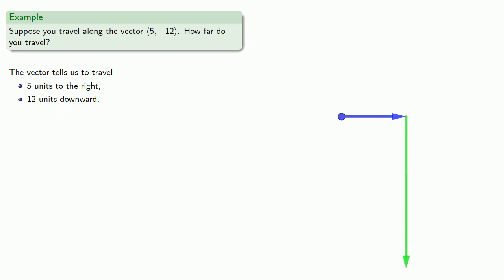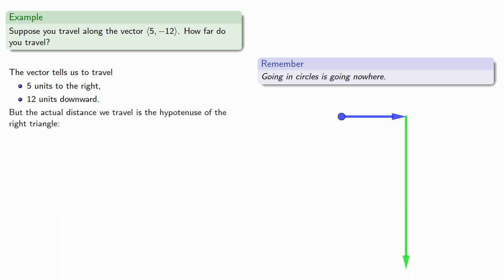But here's a useful idea to keep in mind. Going in circles is going nowhere. It doesn't matter how far you've gone. What really matters is where you are relative to where you started from. And in this case, the actual distance we travel is the hypotenuse of the right triangle.